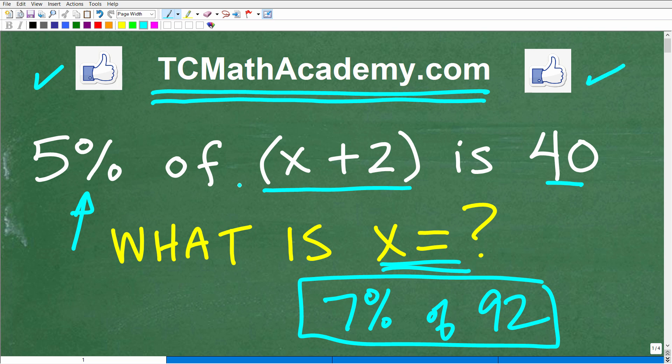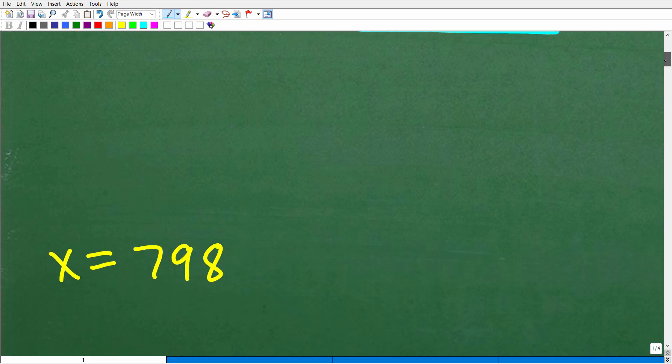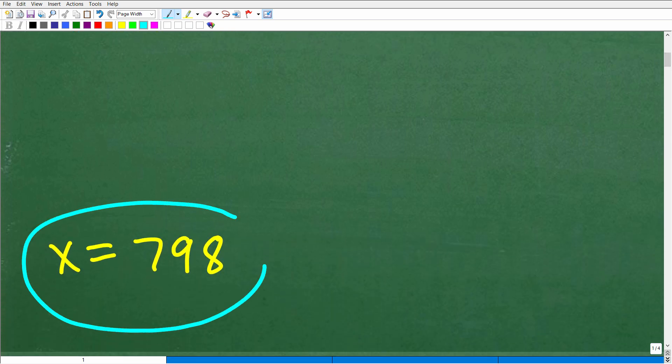All right, so again, 5% of x plus 2 is 40. What is x equal to? Well, let's take a look at the answer right now. x is equal to 798. So how'd you do?